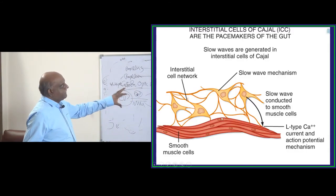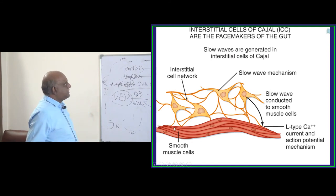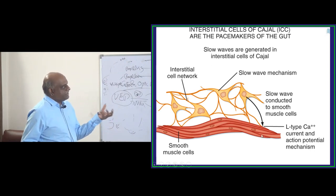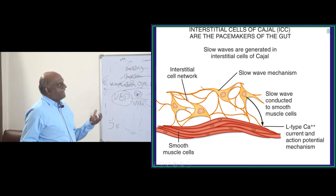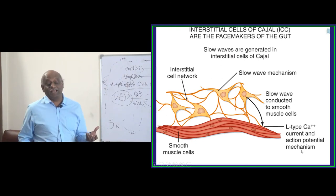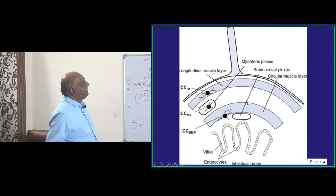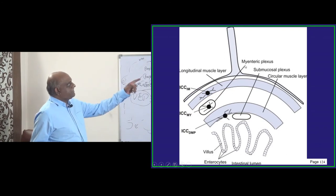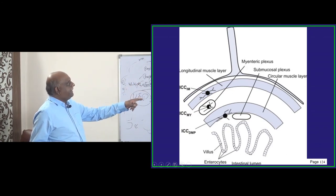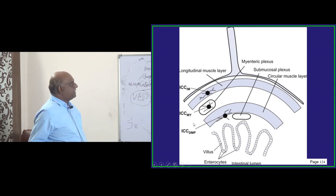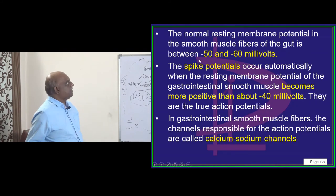The interstitial cells of Cajal are the pacemakers of the gut. There is a big interstitial network, and the slow wave is conducted to the smooth muscle. The smooth muscle of the gut has got calcium channels — L-type calcium channels — and they are responsible for the motility of the gut. You have a myenteric plexus, a submucosal plexus, a circular muscle layer, and a longitudinal muscle layer — that is the structure of the gut.